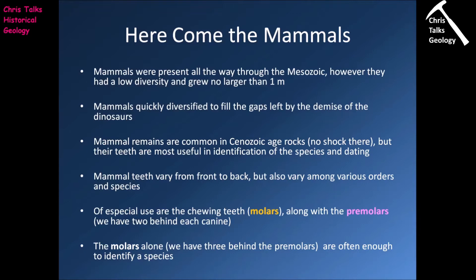Mammals were present all the way through the Mesozoic, however they had a relatively low diversity and they typically grew no larger than about one metre. The vast majority of mammals during the Mesozoic would have been relatively small — think of something about the size of a mouse or a rat — mostly because they were being hunted by larger dinosaurs, and being smaller allowed them to get into small cracks and crevices where they could hide for protection.